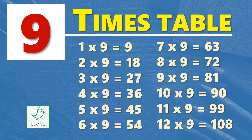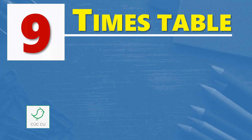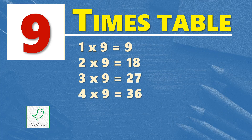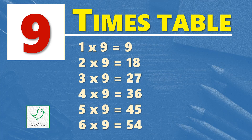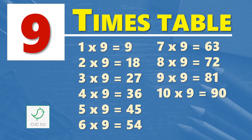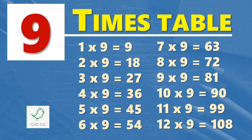Multiplication table of nine. Nine times table. One times nine is nine, two times nine is eighteen, three times nine is twenty-seven, four times nine is thirty-six, five times nine is forty-five, six times nine is fifty-four, seven times nine is sixty-three, eight times nine is seventy-two, nine times nine is eighty-one, ten times nine is ninety, eleven times nine is ninety-nine, twelve times nine is one hundred and eight.